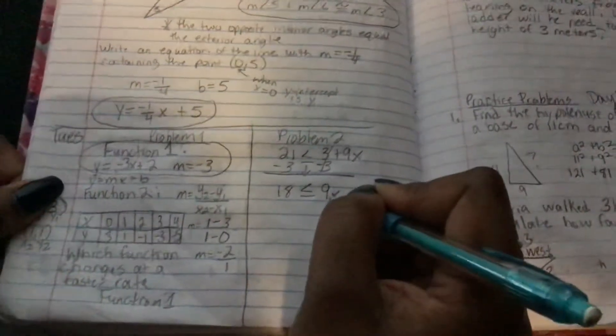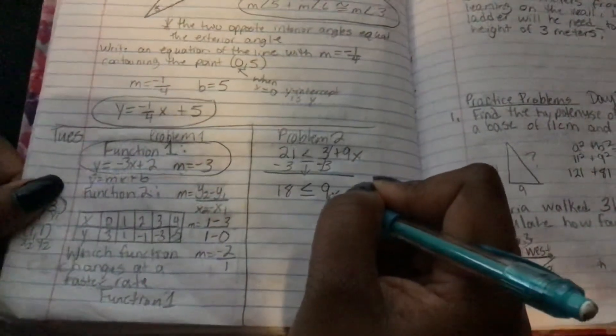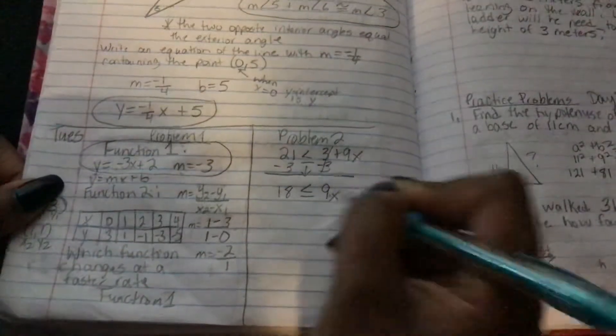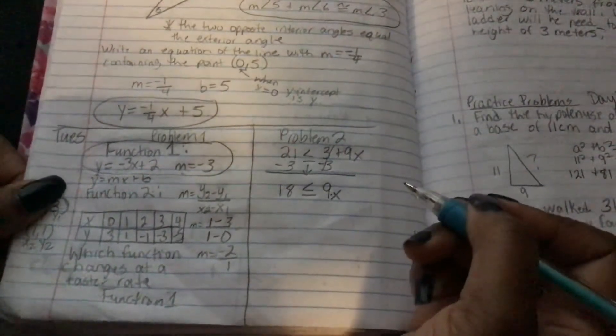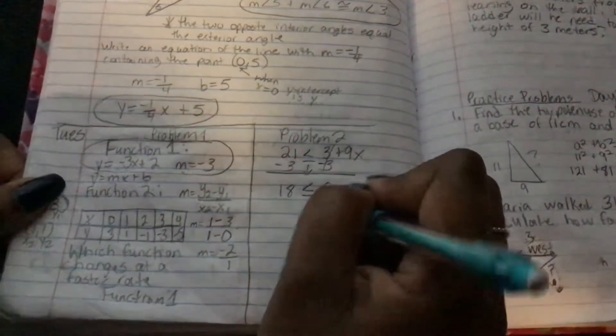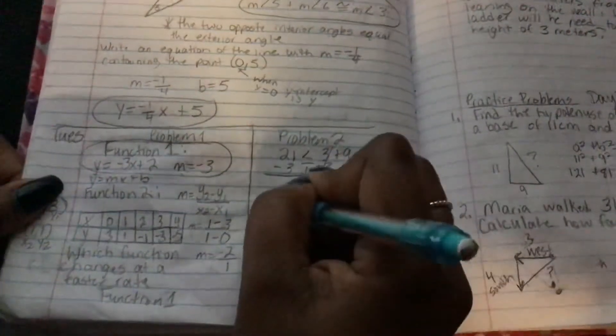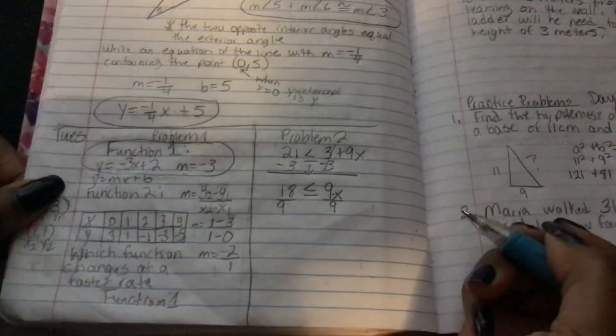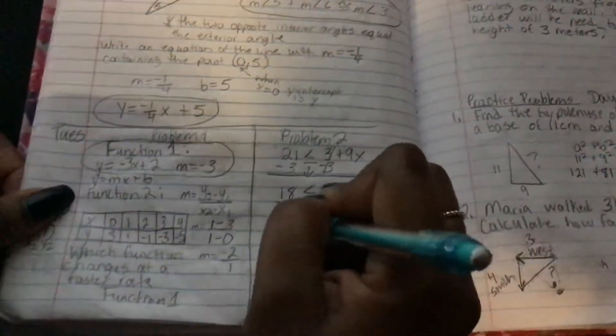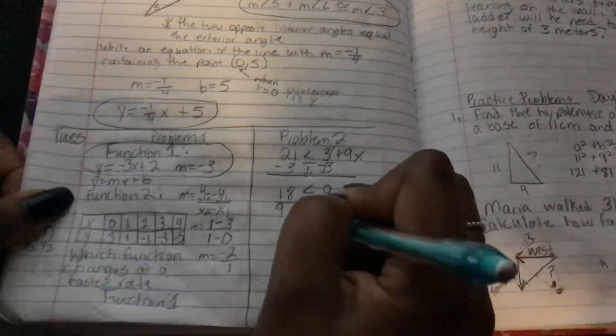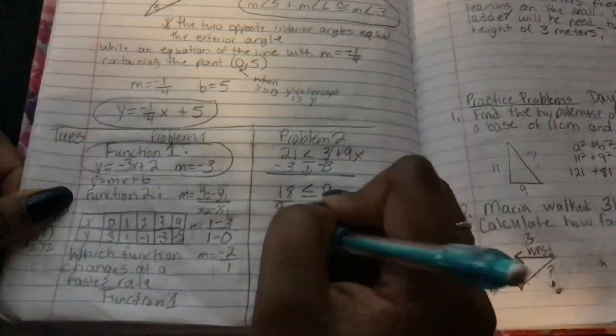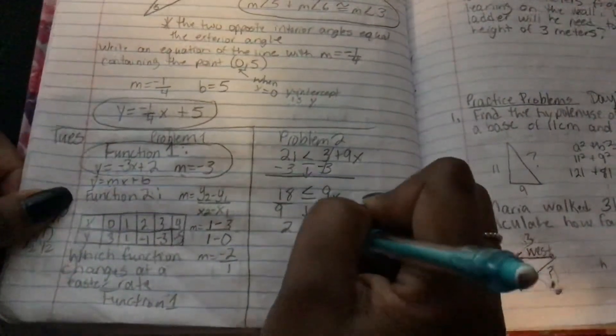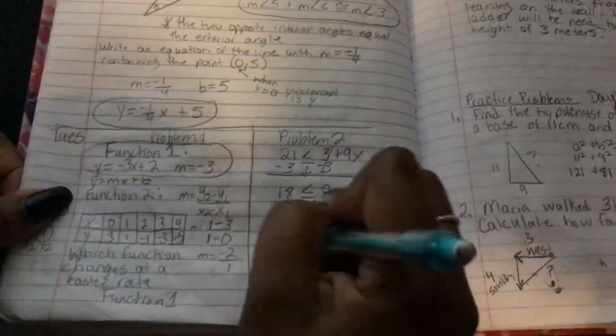To get x by itself, the operation that's automatically between 9 and x is multiplication. The inverse of multiplication is division. So we're going to get rid of the 9 to get x by itself by dividing both sides by 9. When you divide both sides by 9, that's going to give us 2. Bring down the inequality. This is 2 less than or equal to x. This is our answer.